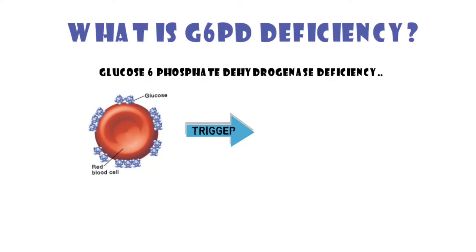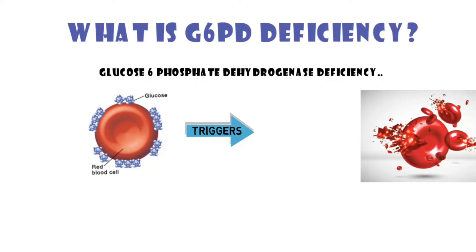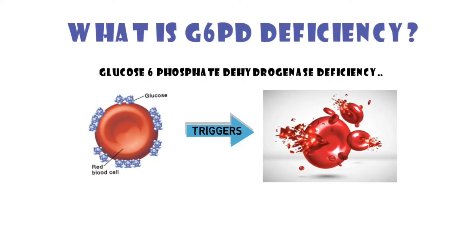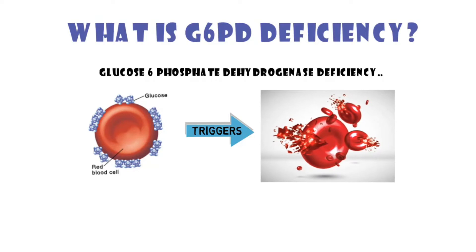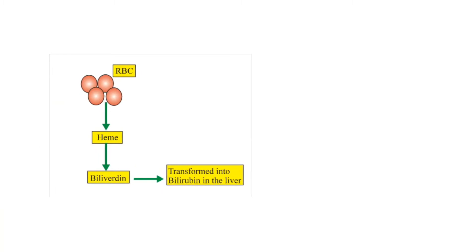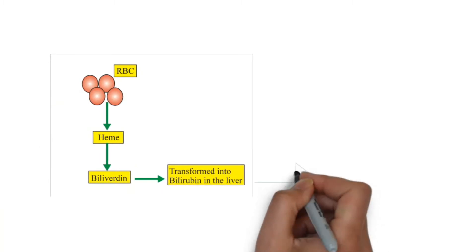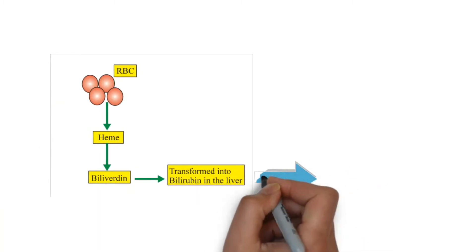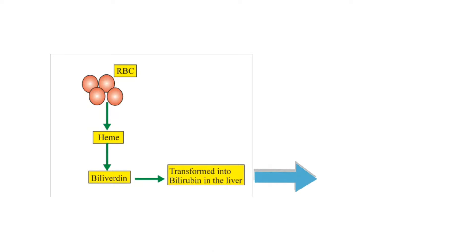But if they are exposed to some drugs and some foods, it will cause acute hemolysis. Acute hemolysis is a condition of damaging red blood cells, which leads to a large amount of hemoglobin broken down into an excessive amount of bilirubin. This results in severe jaundice, which can be identified by yellowing of the skin and eyes.